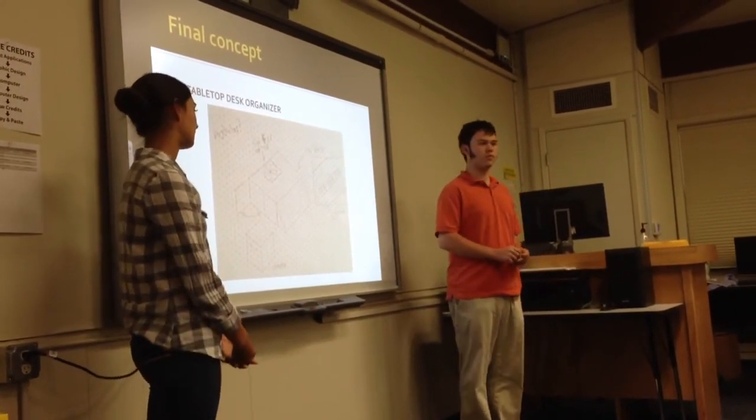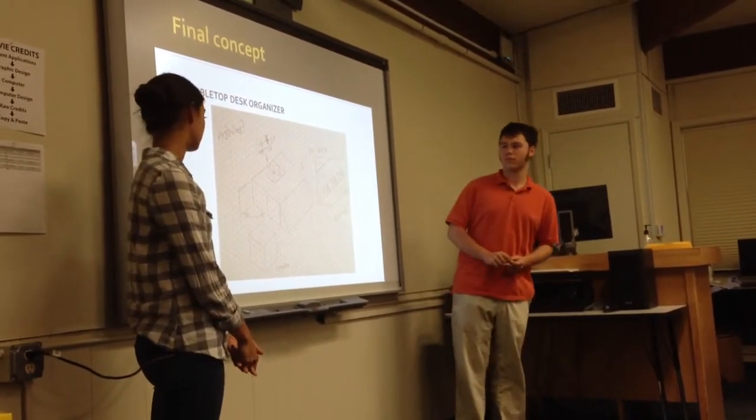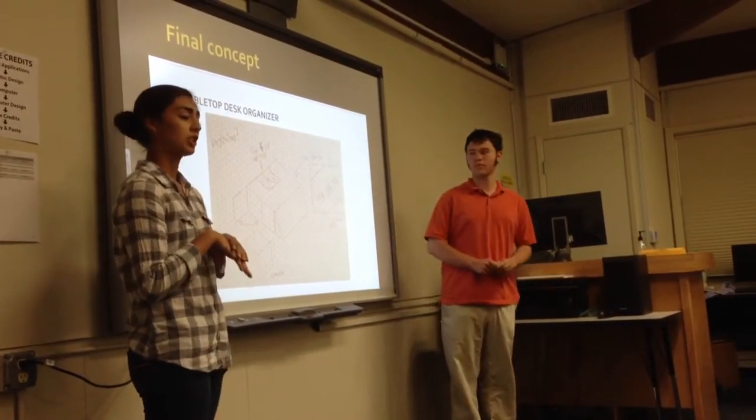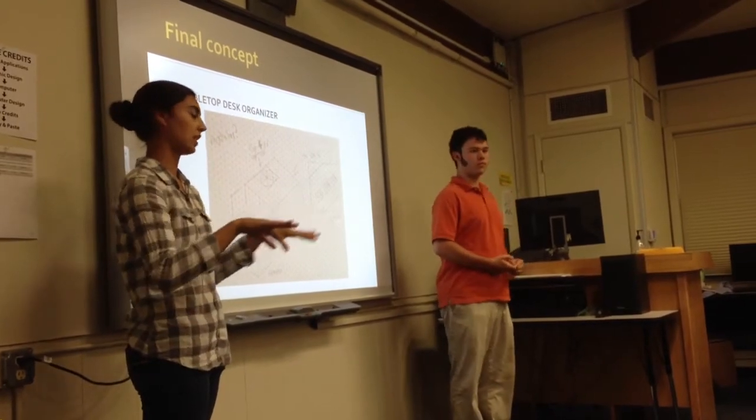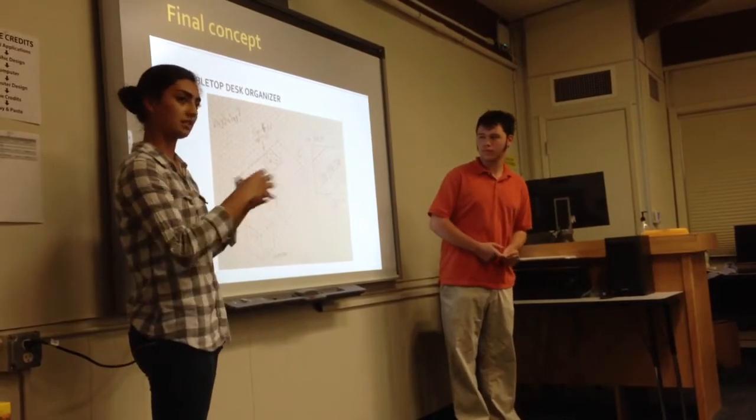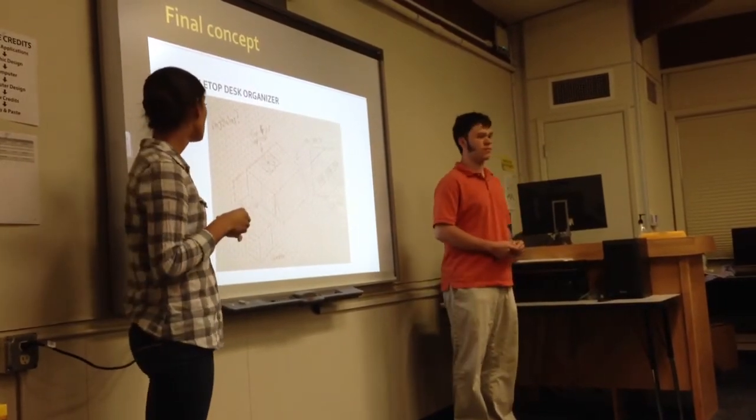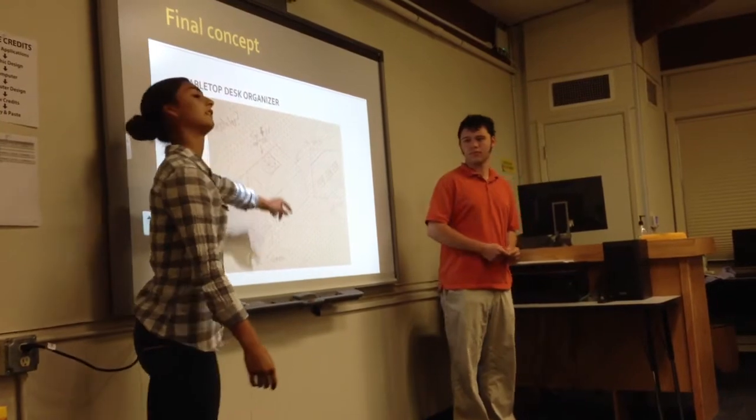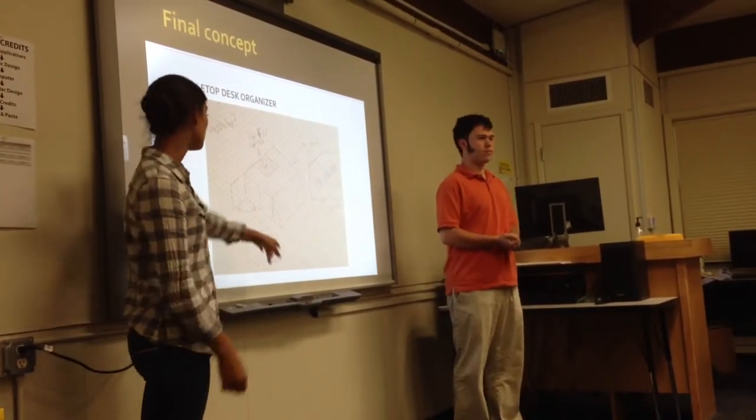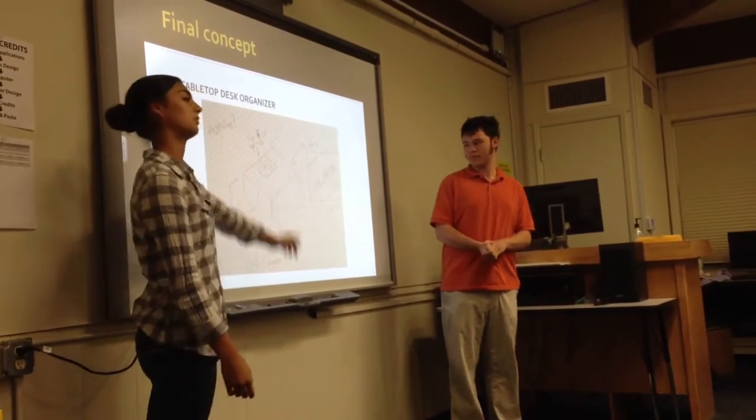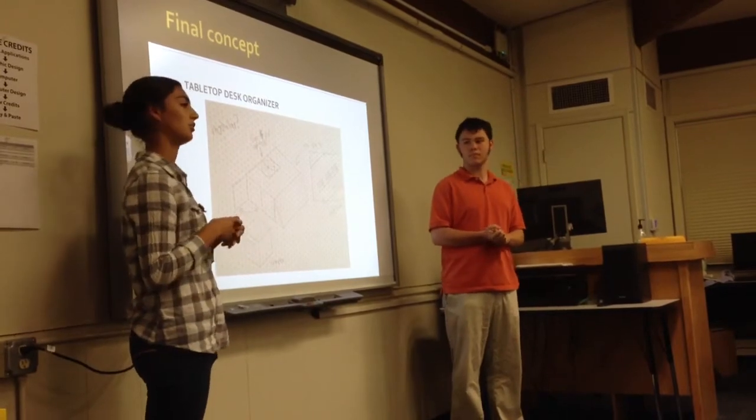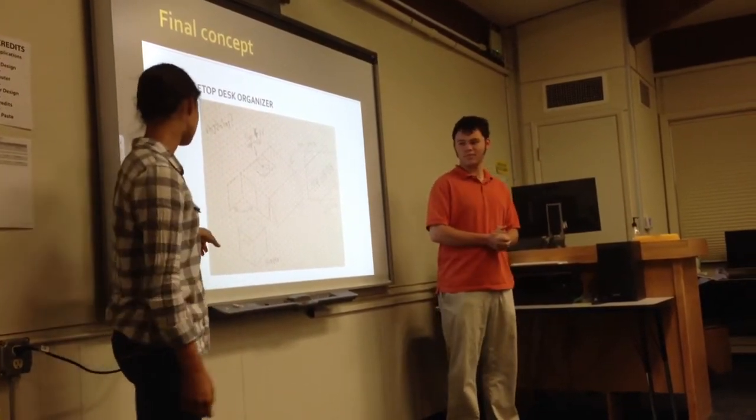The third design we came up with that we eventually decided on was the tabletop desk organizer. It was an organizer that could go on top of your desk, just lying flat. It would have different compartments and it's modular so you could stick them together however you wanted. One compartment would be like a fan for your laptop to prevent overheating, you could have another two drawers, and we also included a USB hub compartment so you could keep all your stuff together in one spot.